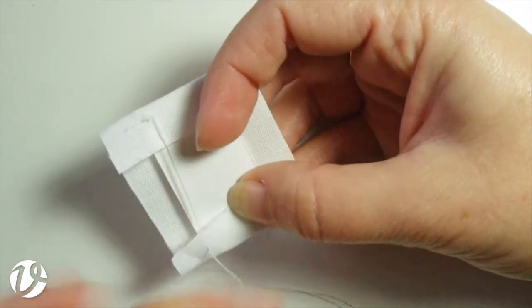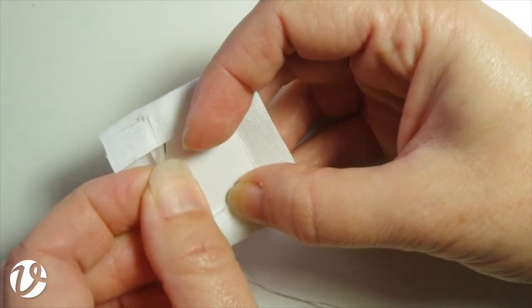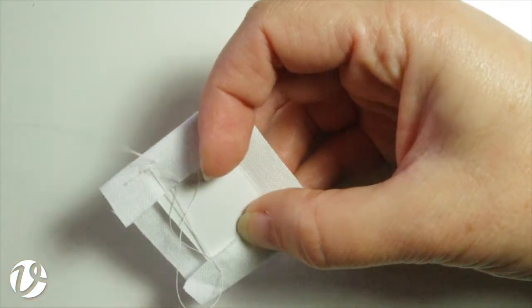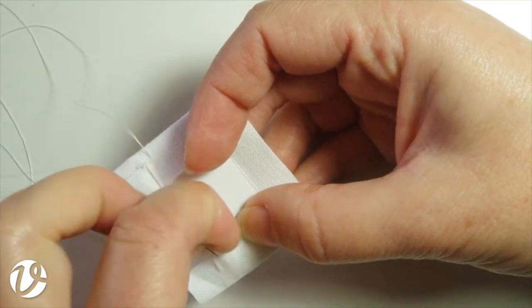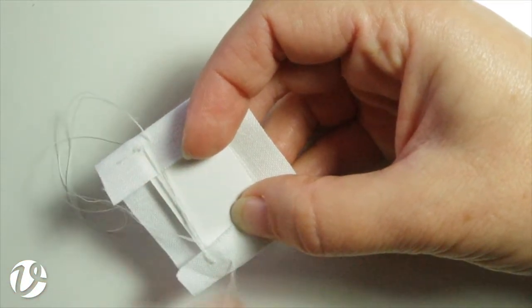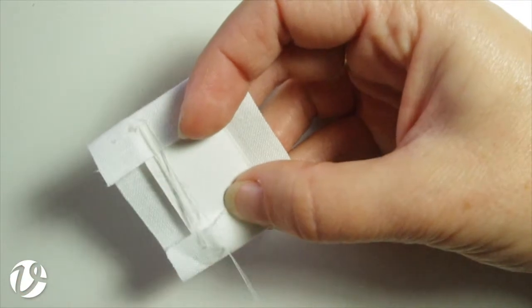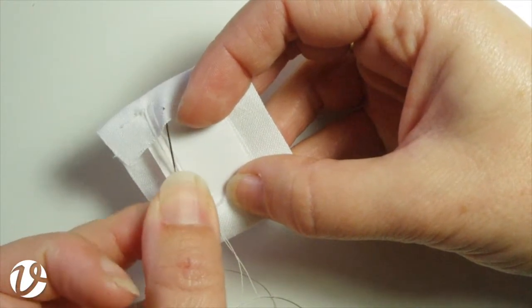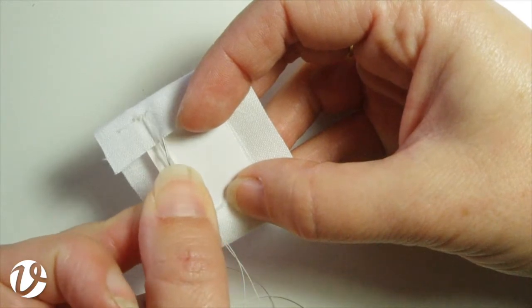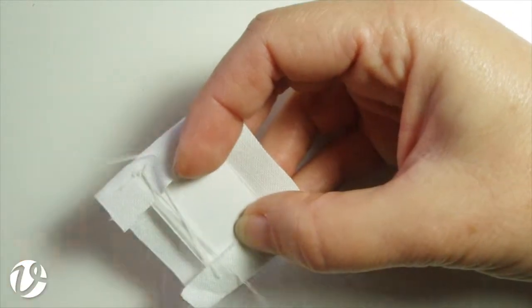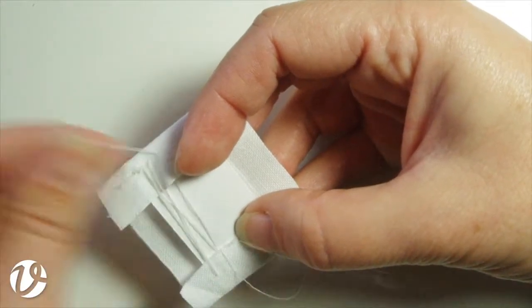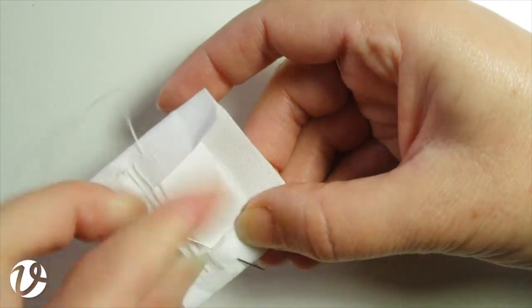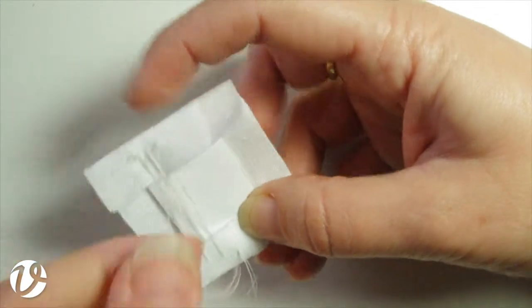And then across to the other side. Now I'm only doing this loosely at the moment. I will re-tighten it later. You don't want to take your stitch too close to the edge because if you do it down here all of those threads could pull away. If it's further away up here it's going to be quite secure. So I'll just keep lacing like that.